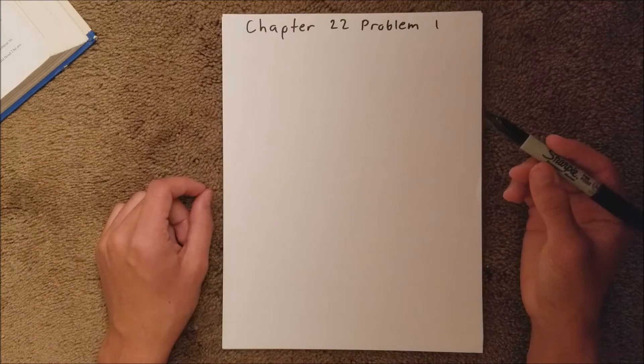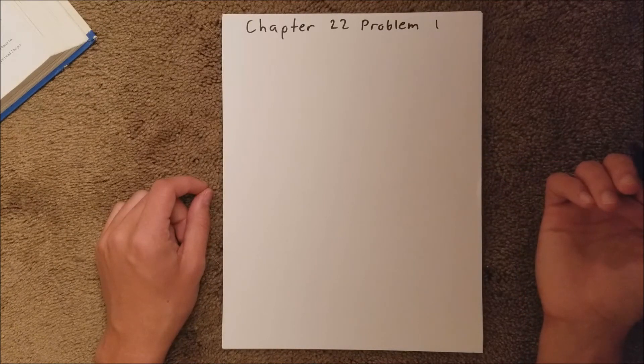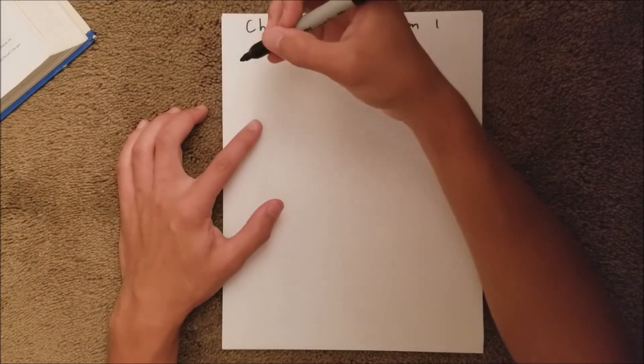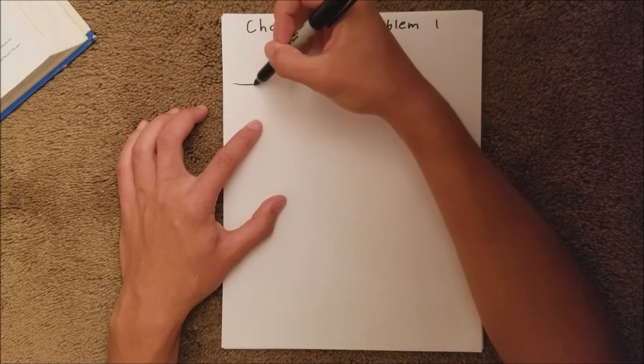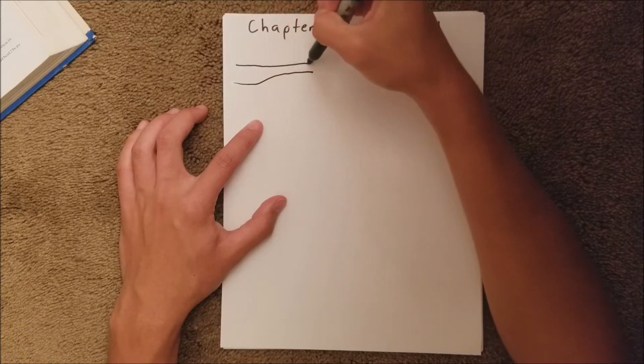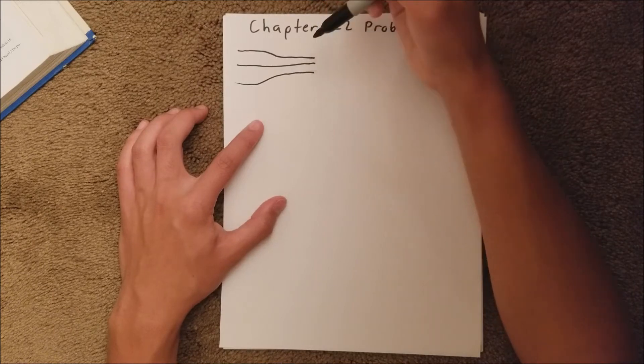Chapter 22 is all about electric fields. In Problem 1, we are given a figure. I'll just draw a simplified version where we have an electric field and field lines that go like this. Something like that.